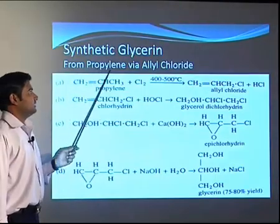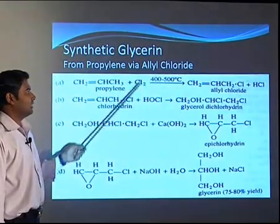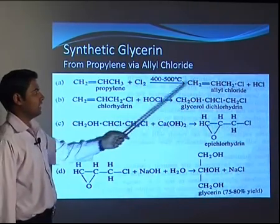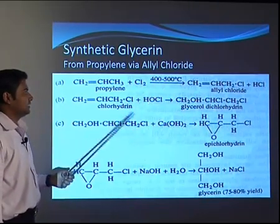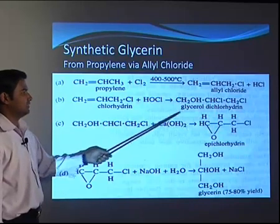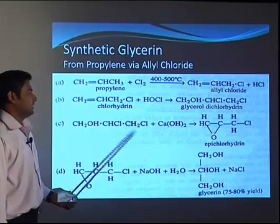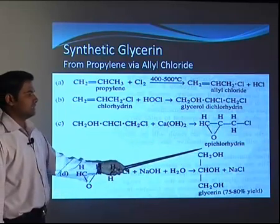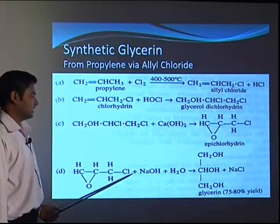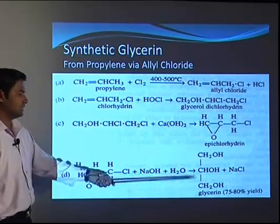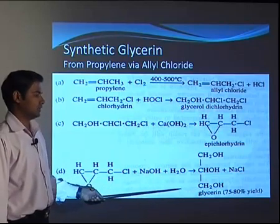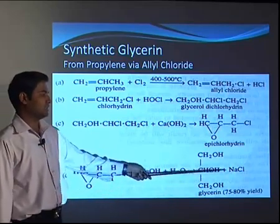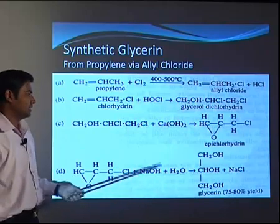For glycerin via propylene allyl chloride route: propylene is reacted with chlorine to yield allyl chloride at around 400 to 500 degree centigrade. Then treatment with HOCl gives glycerol dichlorohydrin. Glycerol dichlorohydrin reacted with calcium hydroxide gives epichlorohydrin. Epichlorohydrin with NaOH and water gives glycerin as a product with 75 to 80 percent yield, along with NaCl salt in the product mixture. The separation of NaCl is a problem in this route.